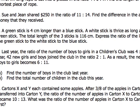A green stick is four cm longer than a blue stick. A white stick is thrice — which means three times longer, or three times as long — as the green stick. The total length of the three sticks is 116 cm. Express the ratio of the length of the green stick to the white stick to the blue stick.